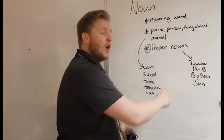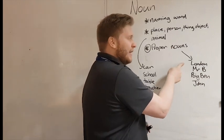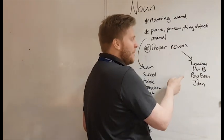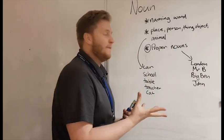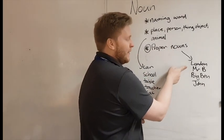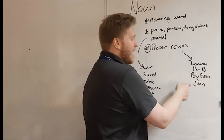We also have proper nouns which are the names of specific things. We can easily see these because they have a capital letter at the start. Things like London, Mr B, Big Ben, John. All those specific things. That's a specific city, specific person, specific landmark, specific clock type, and specific person.